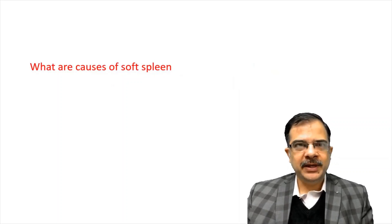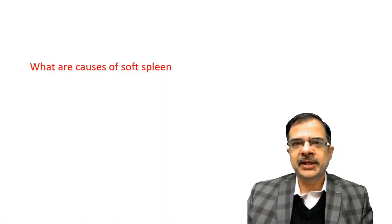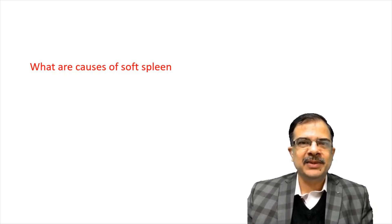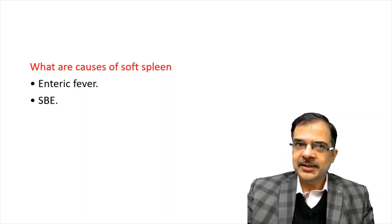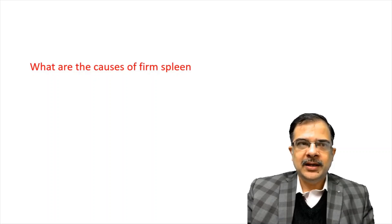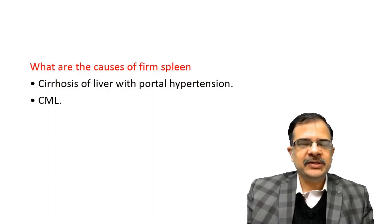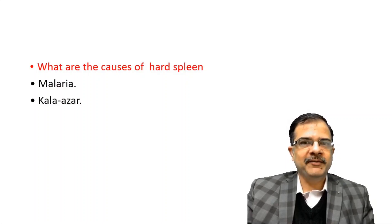The consistency of the spleen — whether it is soft, firm, or hard. A soft spleen feels like a relaxing muscle: seen in enteric fever, acute bacterial endocarditis, and viral infections. A firm spleen like a contracted muscle is seen in cirrhosis and CML. A hard spleen like bone is seen in cases of malaria and kala-azar.